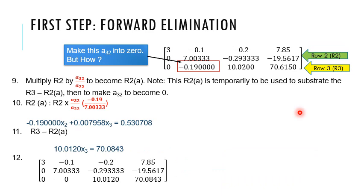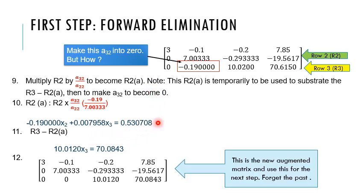In the second column, we will make this element A32 into 0. In this time, we will use R2 and R3 equations, multiply R2 by A32 divided by A32 to become R2A new equation. Then, subtract R3 equation with R2A equation. We can make element A32 to become 0.